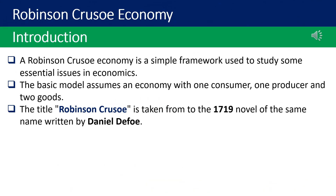Let's start from the introduction of the model. A Robinson Crusoe economy is a simple framework used to study some essential issues in economics. The basic model assumes an economy with one consumer, one producer, and two goods. The title 'Robinson Crusoe' is taken from the 1719 novel of the same name written by Daniel Defoe.